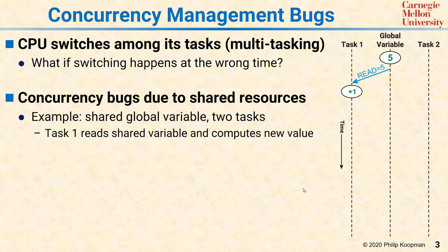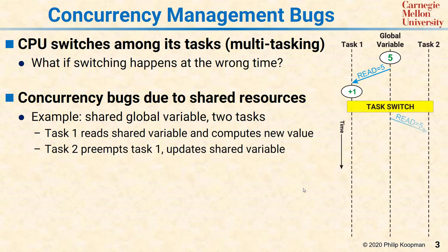Here's the problem. What if there's a task switch after task 1 reads the global, but before it has a chance to write it back? Task 2 then takes over, reads the global — which is still 5 — and wants to add 3. Task 2 completes its computation, adds 3, writes back the result of 8, and the global variable will be 8. As far as task 2 knows, the value is 8 and it's done its job.